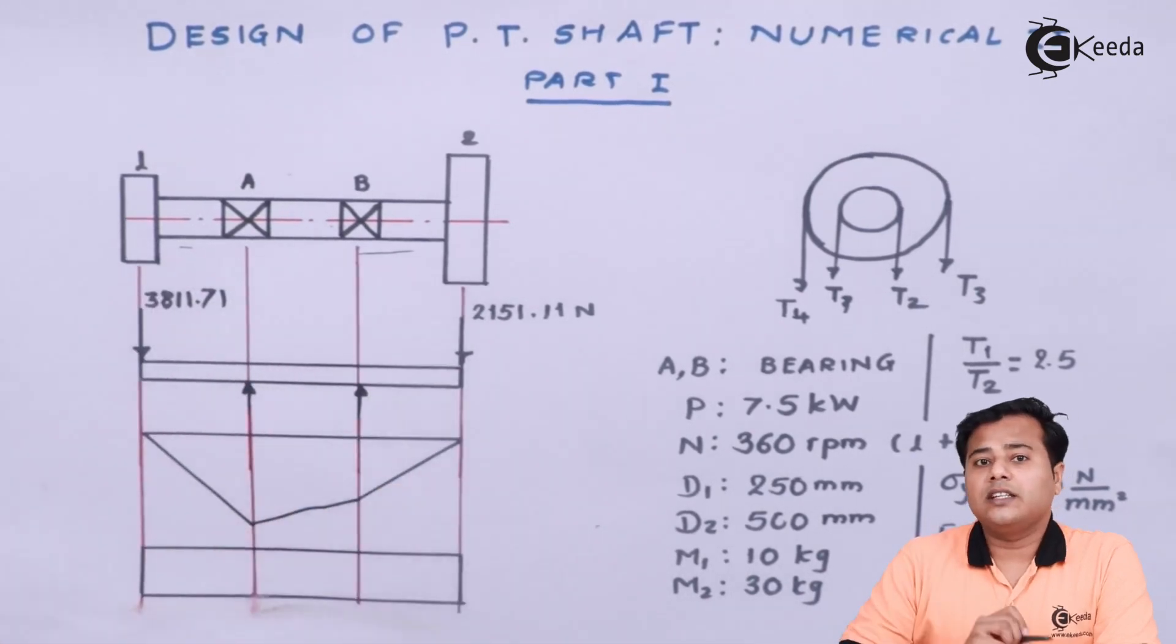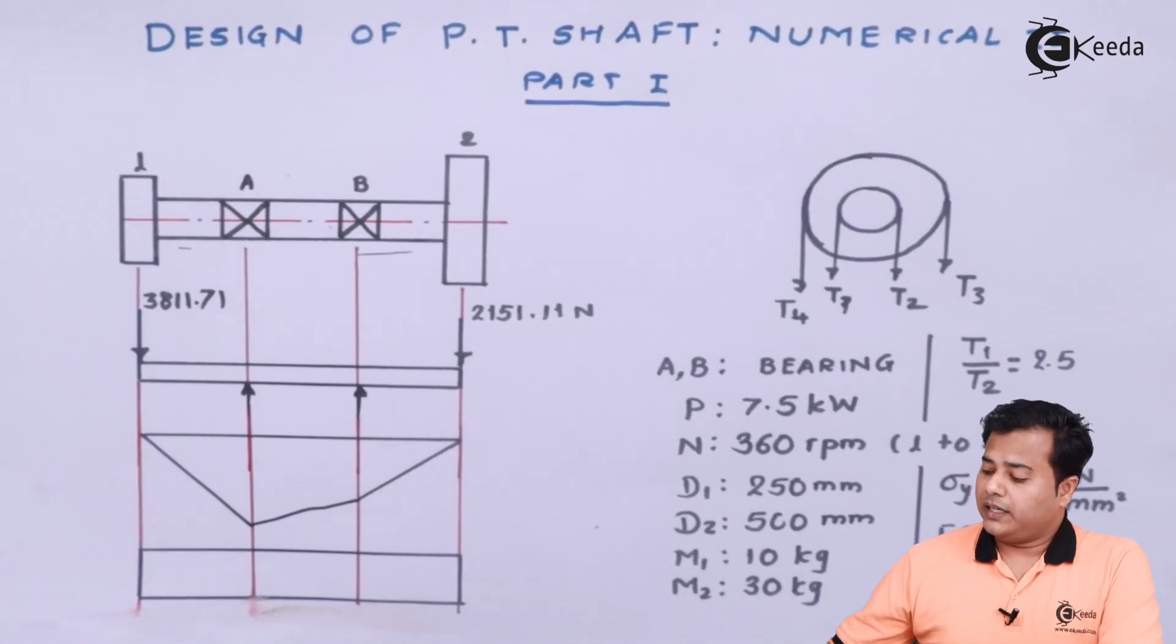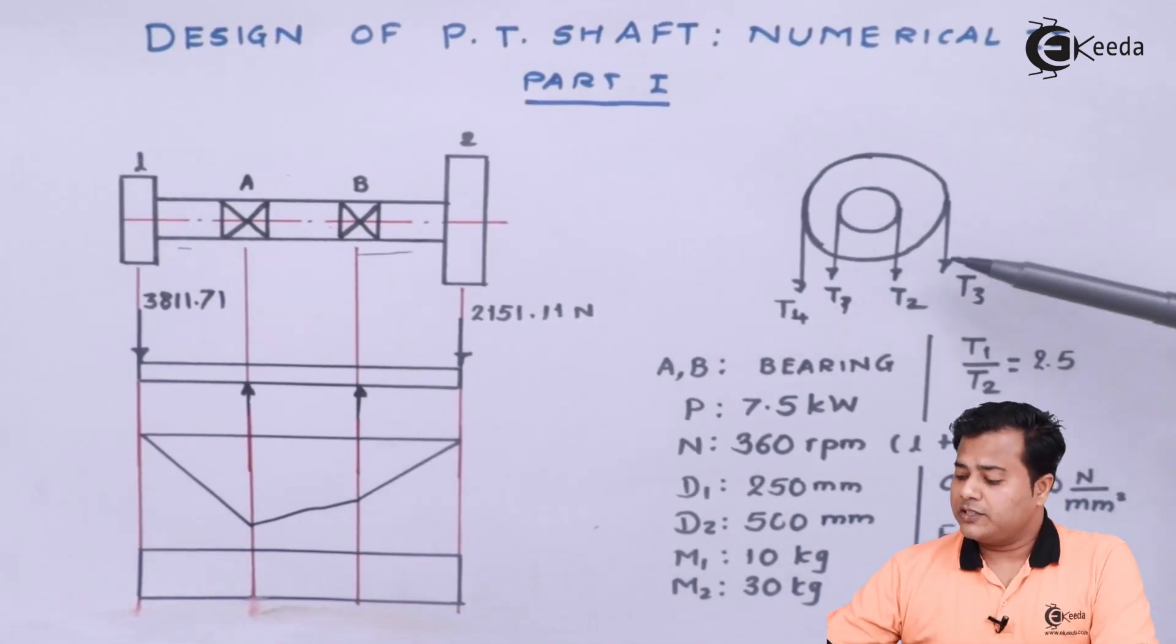These 2 discs are nothing but your pulleys on which the belts are mounted. We also have been given that the position of these belts is vertically downwards. So all of them are acting vertically downwards.